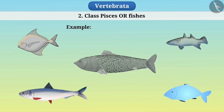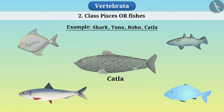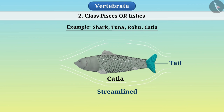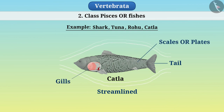Examples of Pisces include shark, tuna, rohu, catla, etc. Their bodies are streamlined and they swim in water with the help of a fleshy tail. Their skin is covered with scales or plates. They use gills for respiration, with the help of which they obtain oxygen dissolved in water.